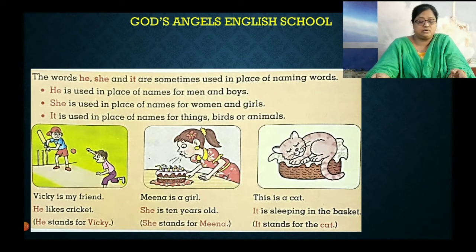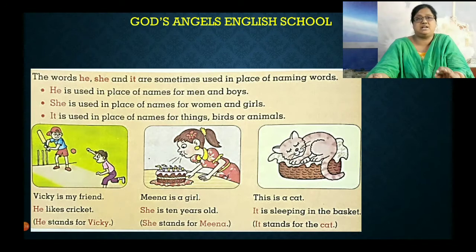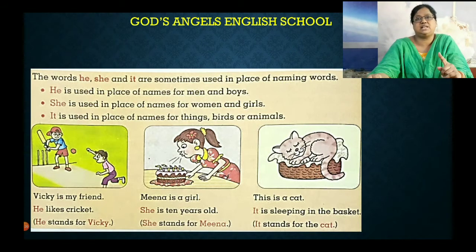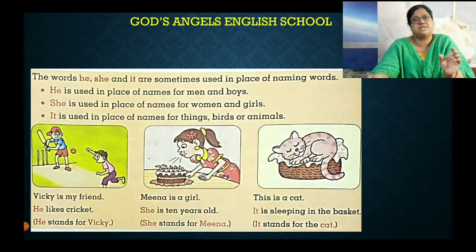अब नीचे देखो, इस picture से explanation देती हूं. Vicky is my friend. यहाँ लड़के का नाम Vicky है, तो हम उसे हटा सकते हैं. Vicky की जगह पर 'he likes cricket' — so he stands for Vicky. He किसके लिए लिखा है? Vicky के लिए. He is a boy — boy या man का नाम हटाकर वहाँ he word use कर सकते हैं.